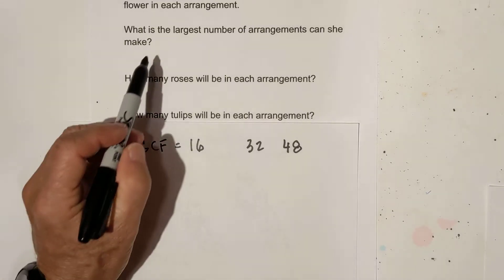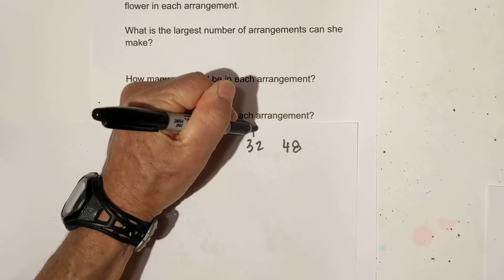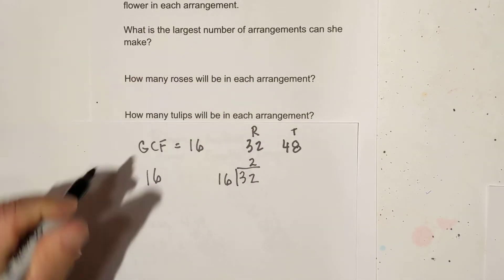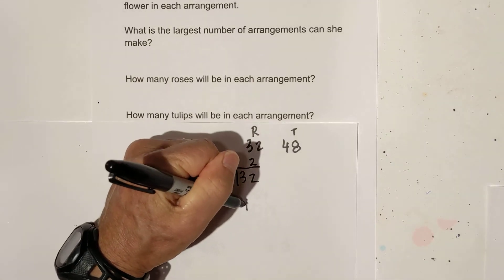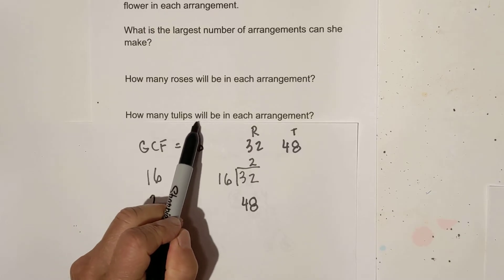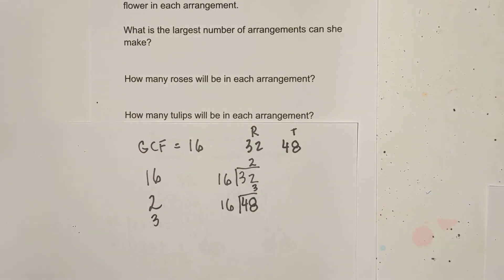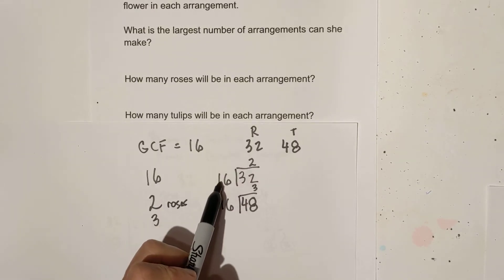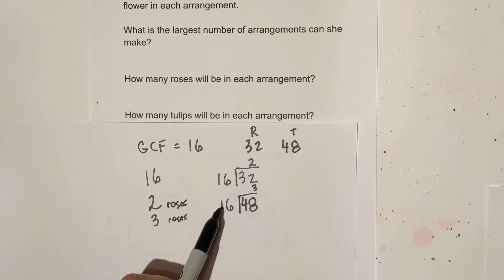Let's answer these questions. What is the largest number of arrangements she can make? That will be 16. How many roses? They have 32 roses, so you take 32 divided by 16, and that is 2 — you place 2 roses in each arrangement. For the tulips, you take 48 divided by the greatest common factor of 16, and that equals 3. So in summary: 16 groups, 2 roses per arrangement, and 3 tulips per arrangement.